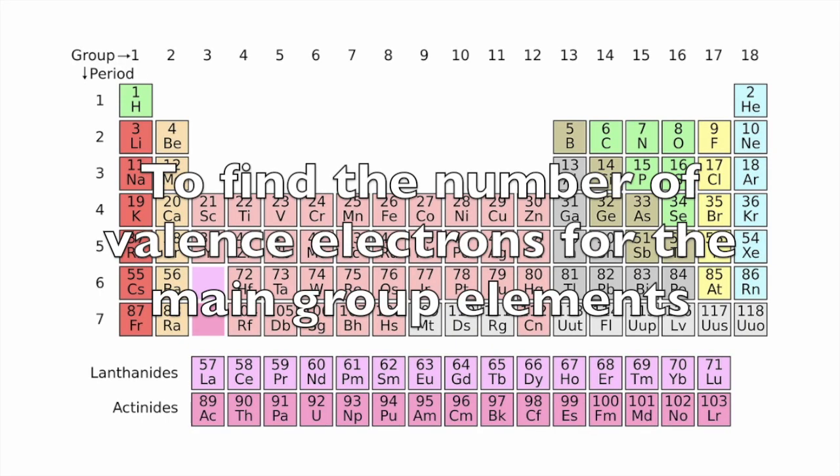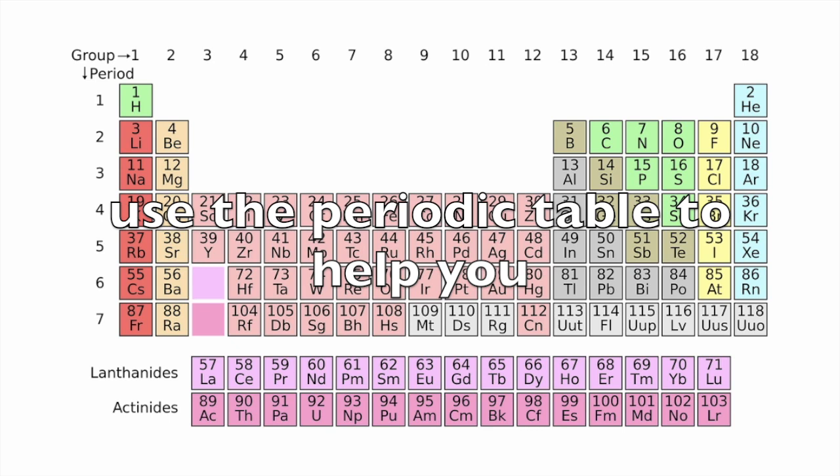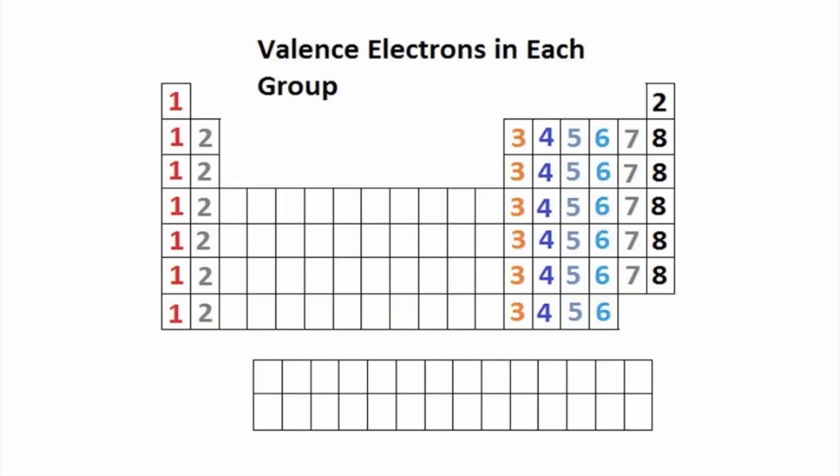To find the number of valence electrons for the main group elements, use the periodic table to help you. We notice that every atom in the first group has one valence electron, every atom in the second group has two. Now if we move all the way over to the right past the transition metals, we will see that every atom in the boron group has three valence electrons, every atom in the carbon group has four, every atom in the nitrogen group has five, in the oxygen group has six, the halogens have seven, and the noble gases have eight, except for helium which only has two because its outer shell can only hold two valence electrons.